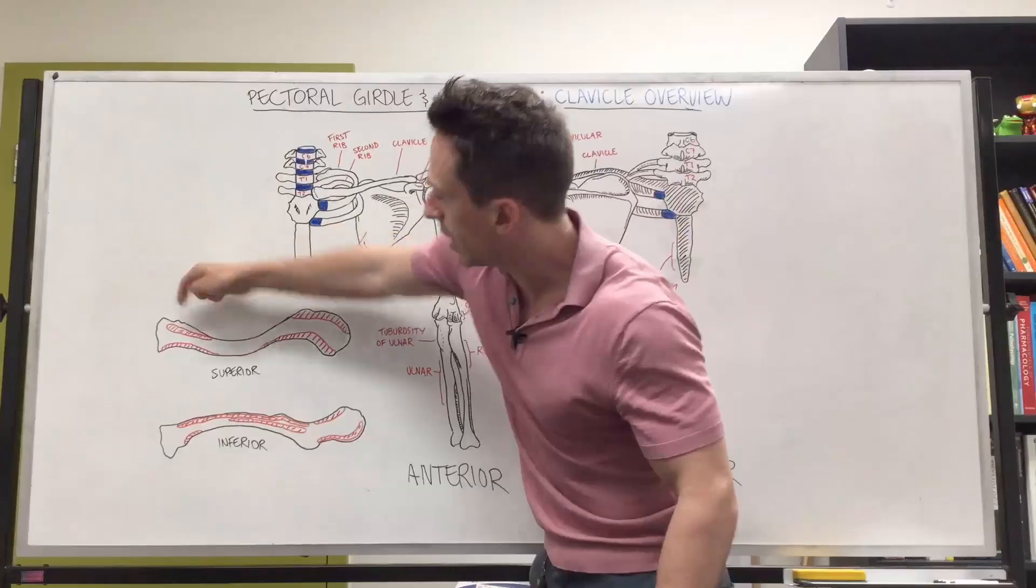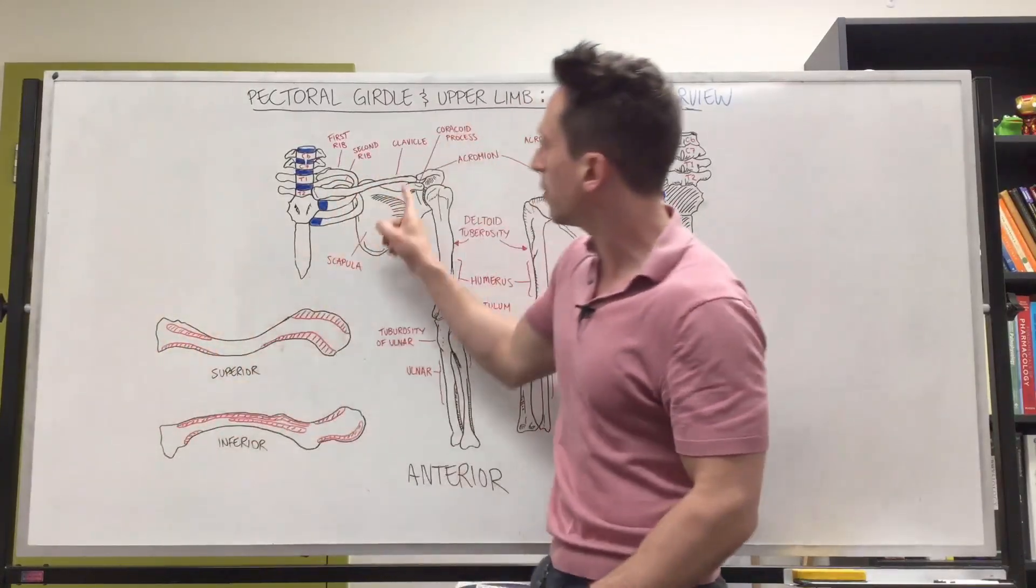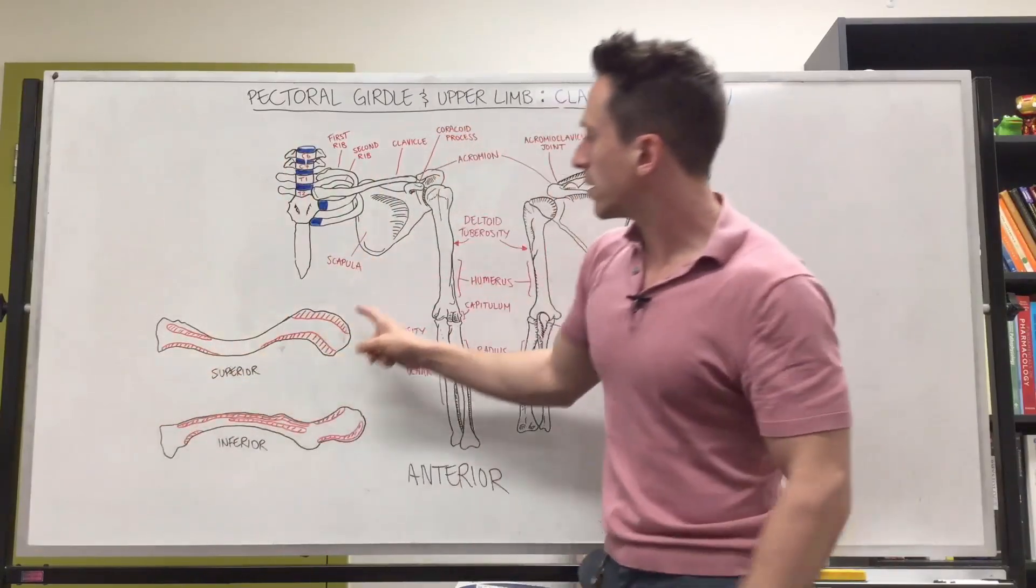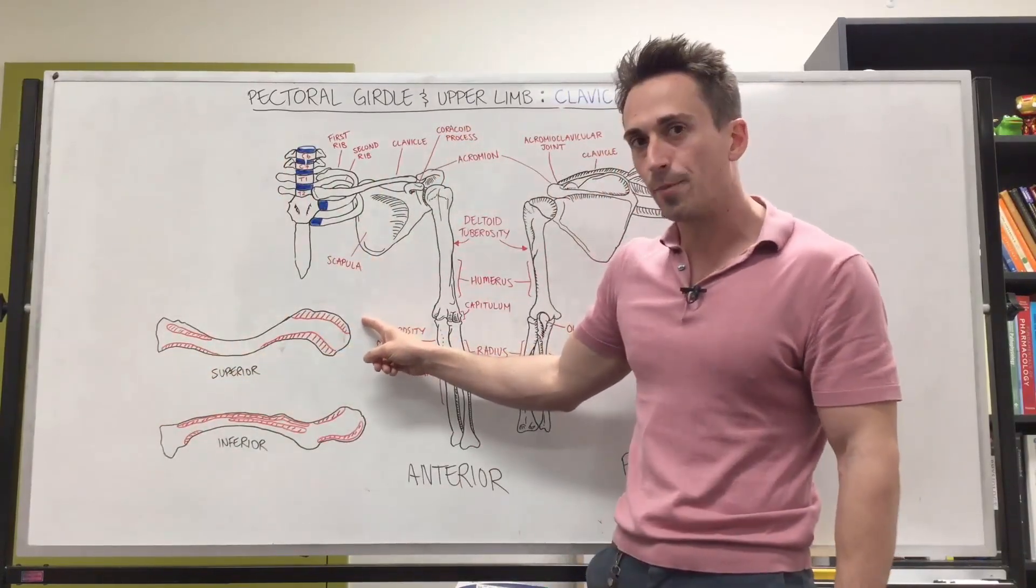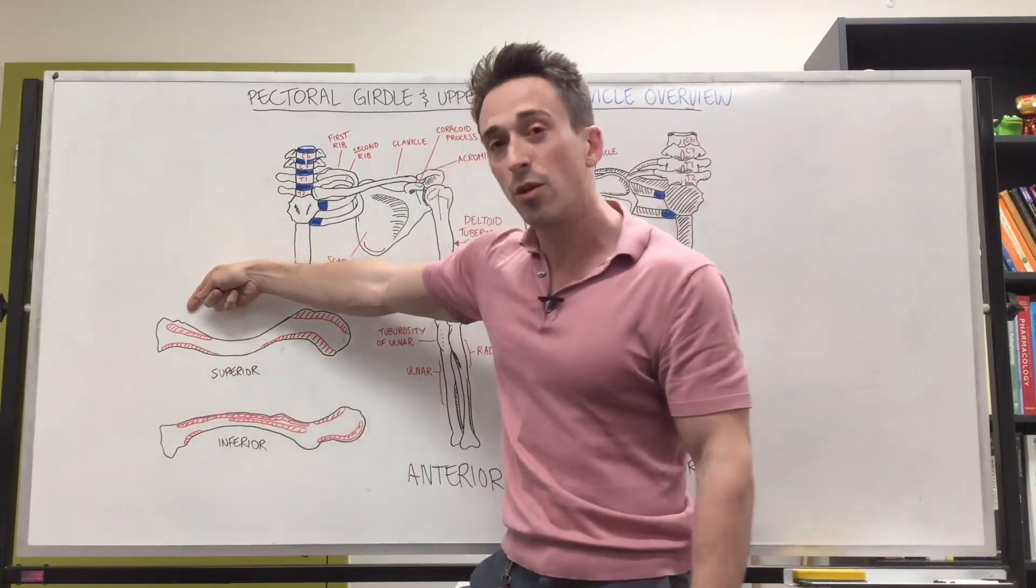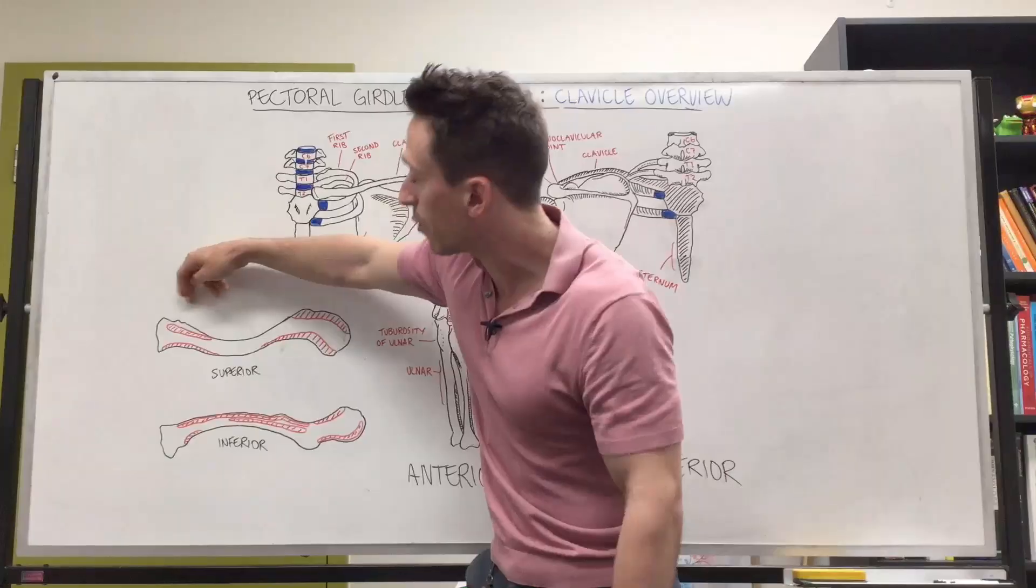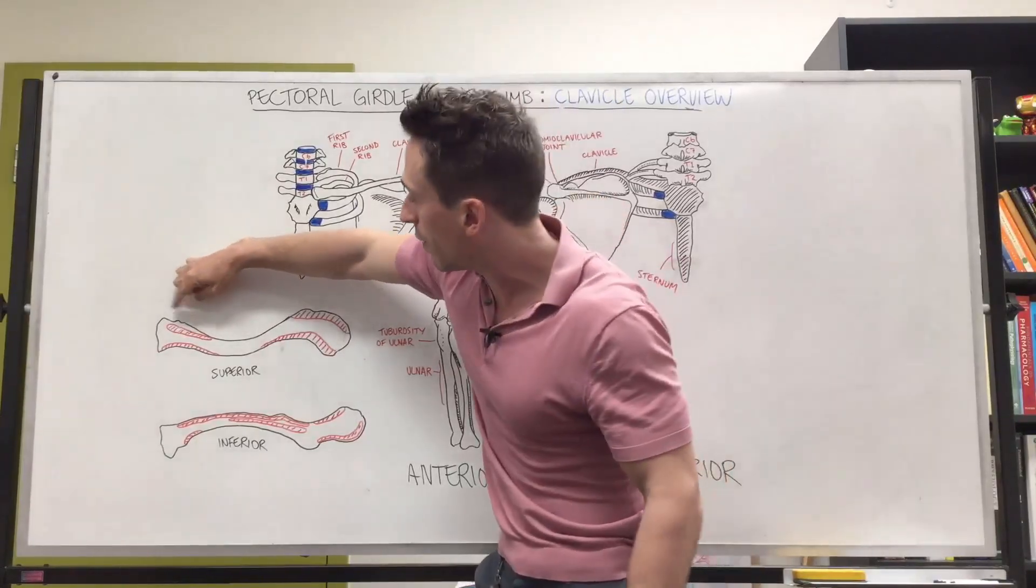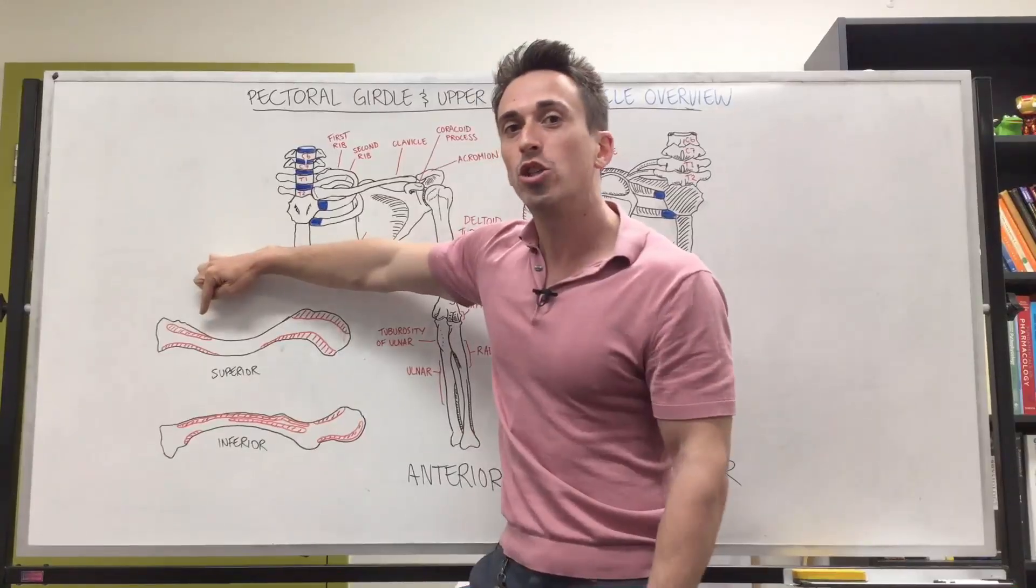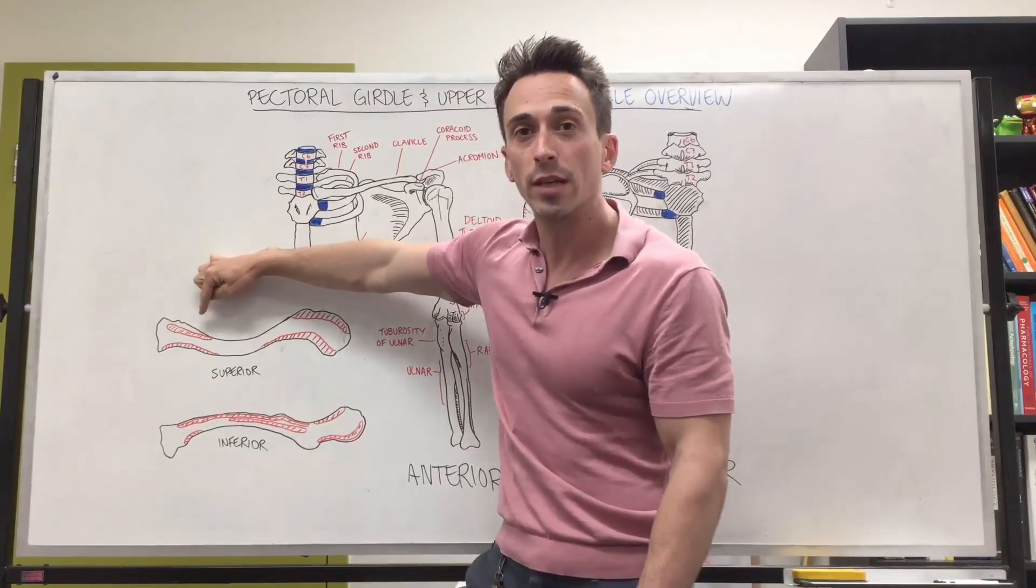So if we look at this one here, this is most medially, so this is going to be this left clavicle. This side is going to be the medial side, so the sternal side. This is going to be the acromion side, all right, so the lateral side. So if we start here at the most posterior portion, but also superior and medially, what you're going to find is this red area here highlights where the sternocleidomastoid originates.